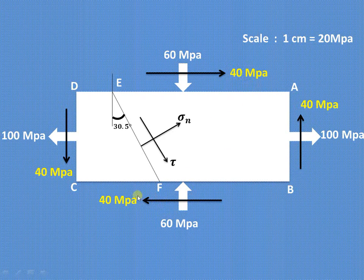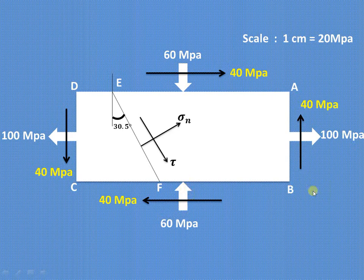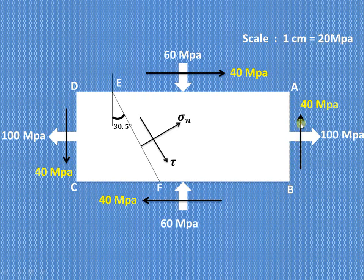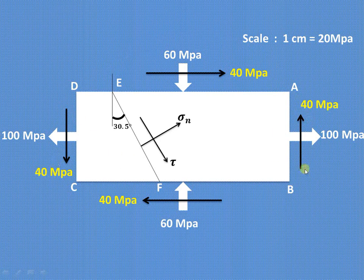On plane AB, the normal stress is tensile at 100 MPa and the complementary shear stress is 40 MPa. The complementary shear stress on this plane is acting in directions that produce an anti-clockwise moment, and therefore this shear stress is considered as a negative shear stress.